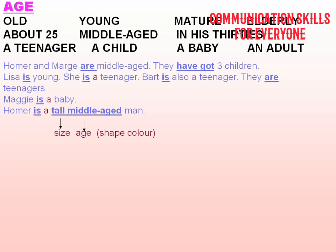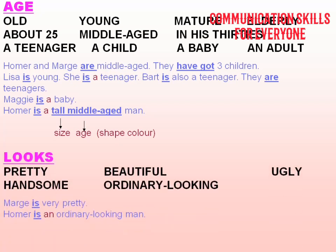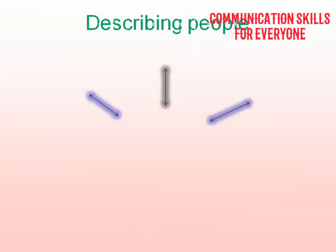For looks, you can say pretty, beautiful, handsome, ordinary looking, ugly, awesome, wonderful, or extraordinary. You can use adjectives depending on the context. For example: Marge is very pretty, Homer is an ordinary-looking man.